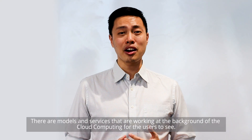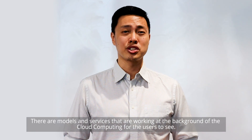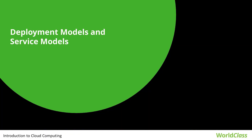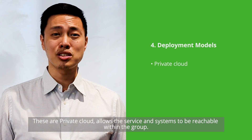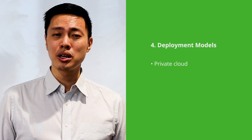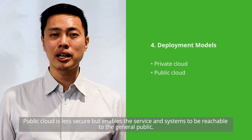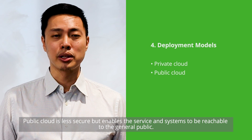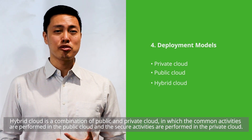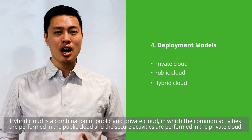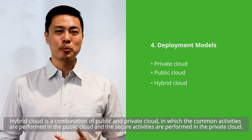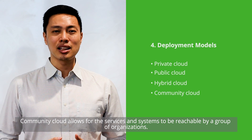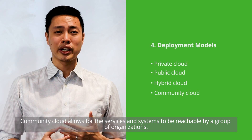There are models and services working in the background of cloud computing. These are deployment and service models. The different types of deployment models define access for cloud computing. Private cloud allows services and systems to be reachable within a group. Public cloud is less secured but enables services and systems to be reachable to the general public. Hybrid cloud is a combination of public and private cloud, where common activities are performed in the public cloud and secured activities in the private cloud. Community cloud allows services and systems to be reachable by a group of organizations.